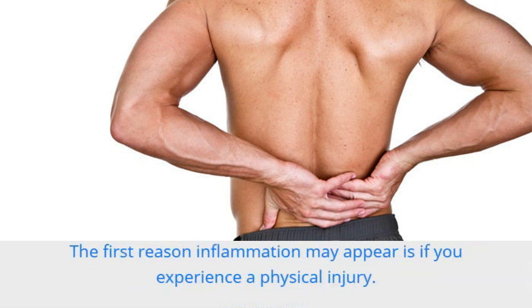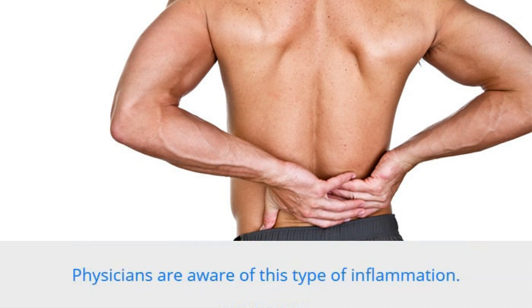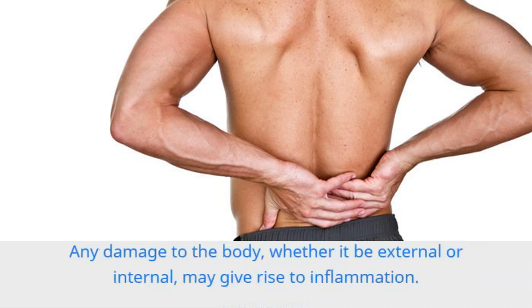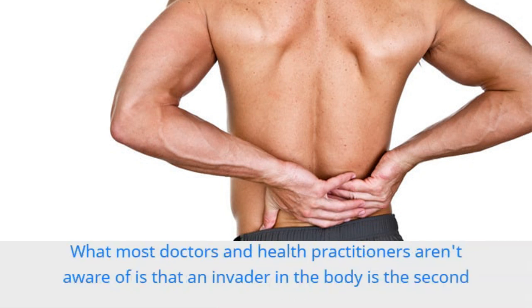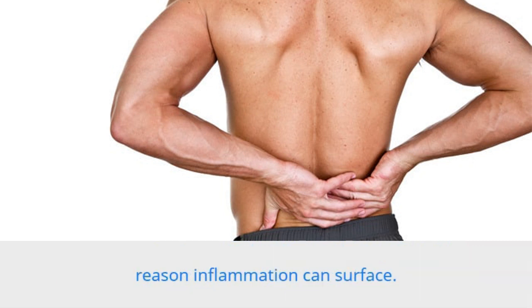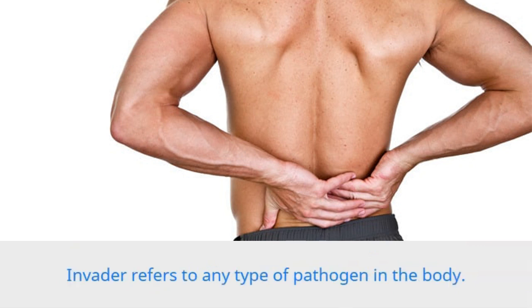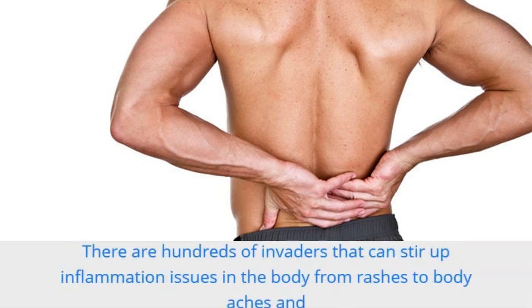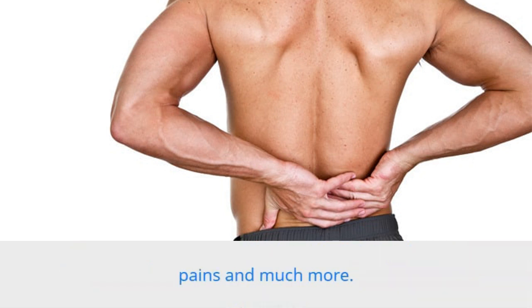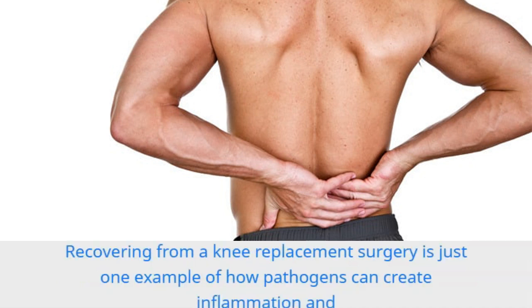Inflammation never develops on its own and only emerges for two reasons. The first reason inflammation may appear is if you experience a physical injury — physicians are aware of this type of inflammation, and any damage to the body, whether external or internal, may give rise to inflammation. The second reason inflammation can surface is an invader in the body. Invader refers to any type of pathogen; there are hundreds of invaders that can stir up inflammation issues in the body, from rashes to body aches and pains and much more.